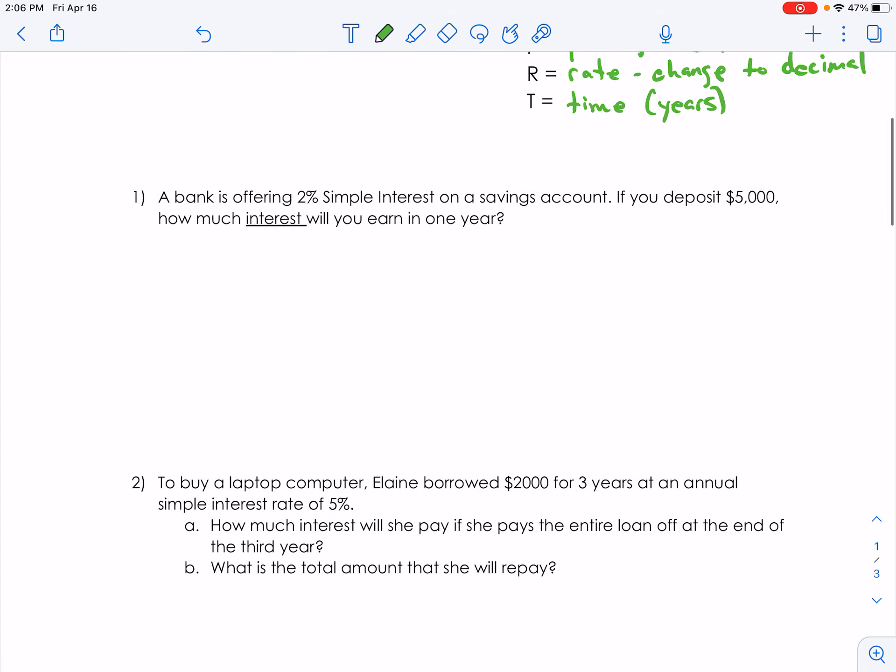So number one says a bank is offering 2%. So that's the rate. And if we change it to a decimal, number two, we need to move it twice. So that's 0.02.